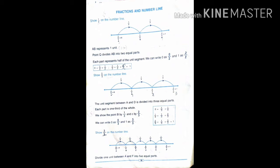A, B represents 1 unit. 1 unit means 1 centimeter. So 0 to 1 is 1 centimeter. That is the 1 centimeter value. Point Q divides AB into 2 equal parts. What is the value? What is the denominator value?